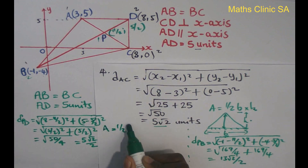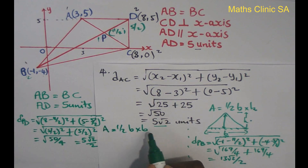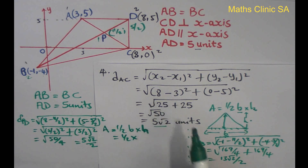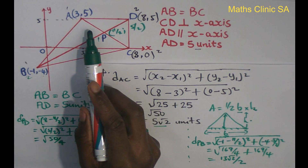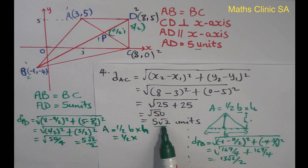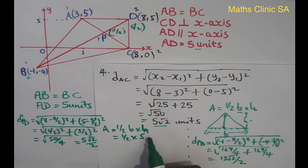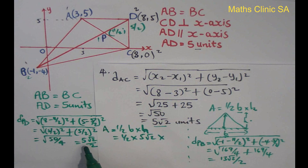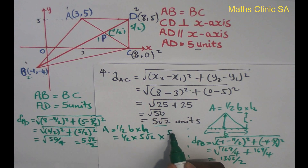Area equals half base times height. The base here is 5 root 2 (which is AC), and the height is PD. So the area of the first triangle equals half times 5 root 2 times 5 root 2 over 2.